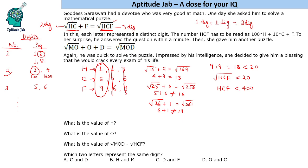So HCF is 169. Now the second puzzle. In this case we are given that under root MO plus O plus D is under root MOD. So we have a three digit number here again.